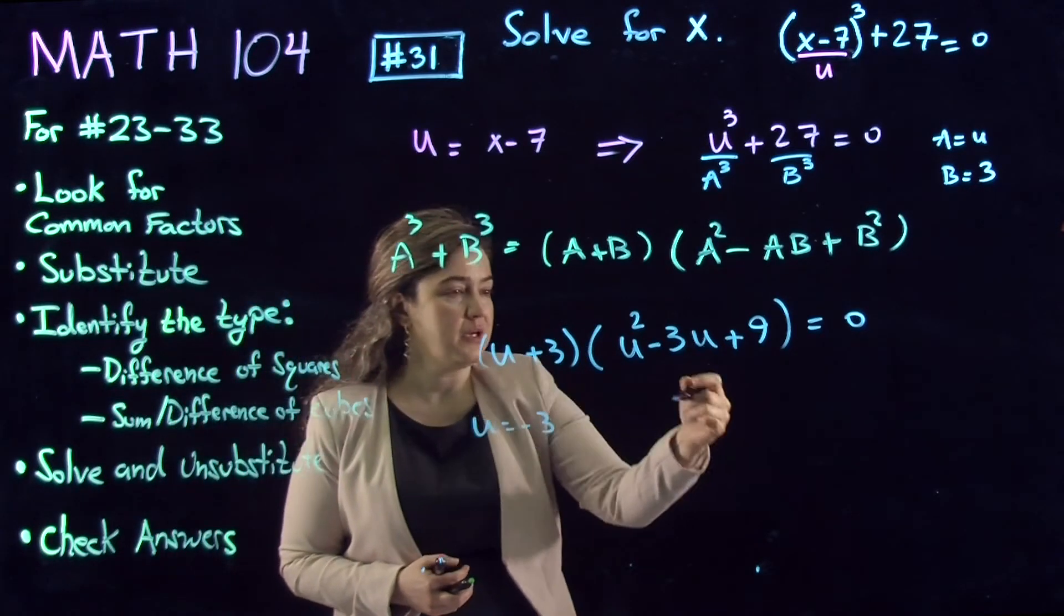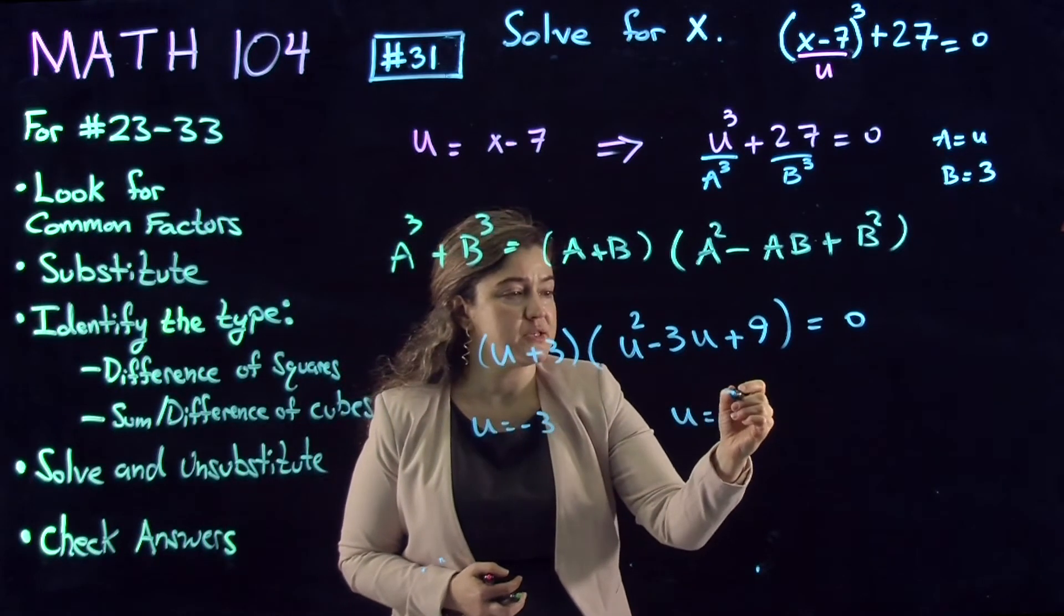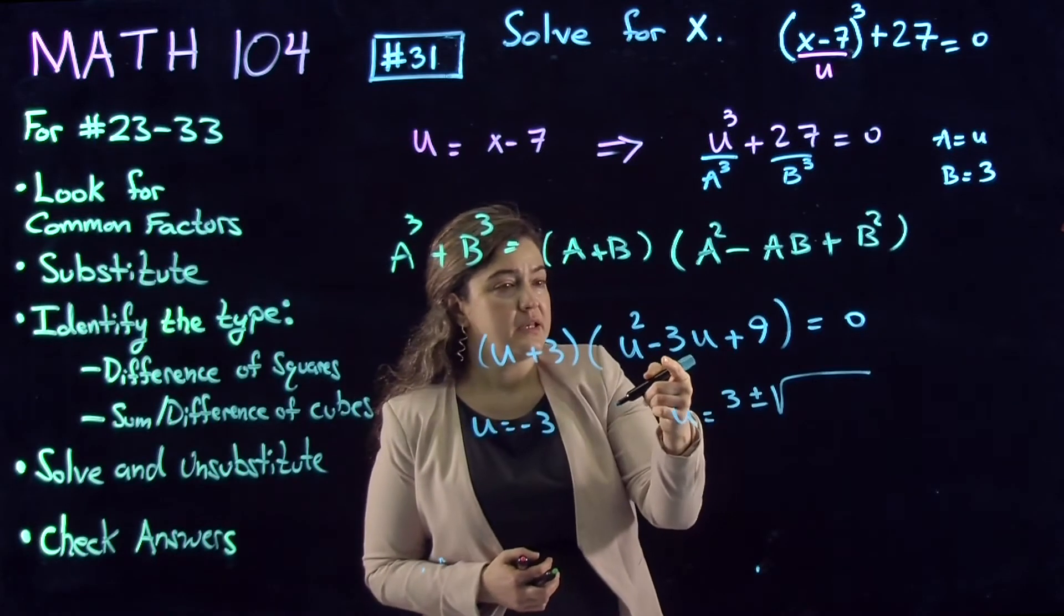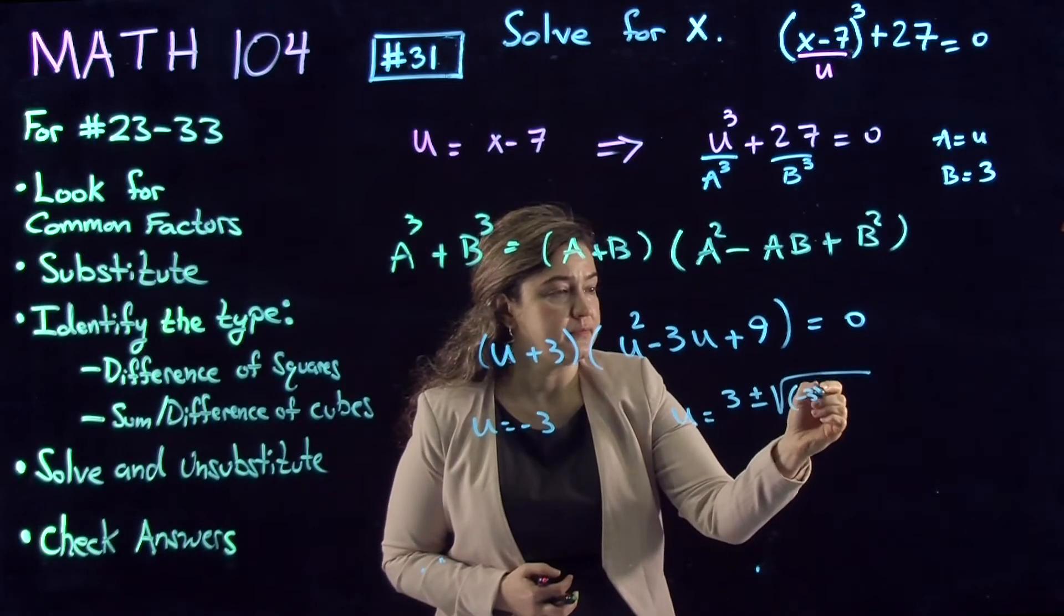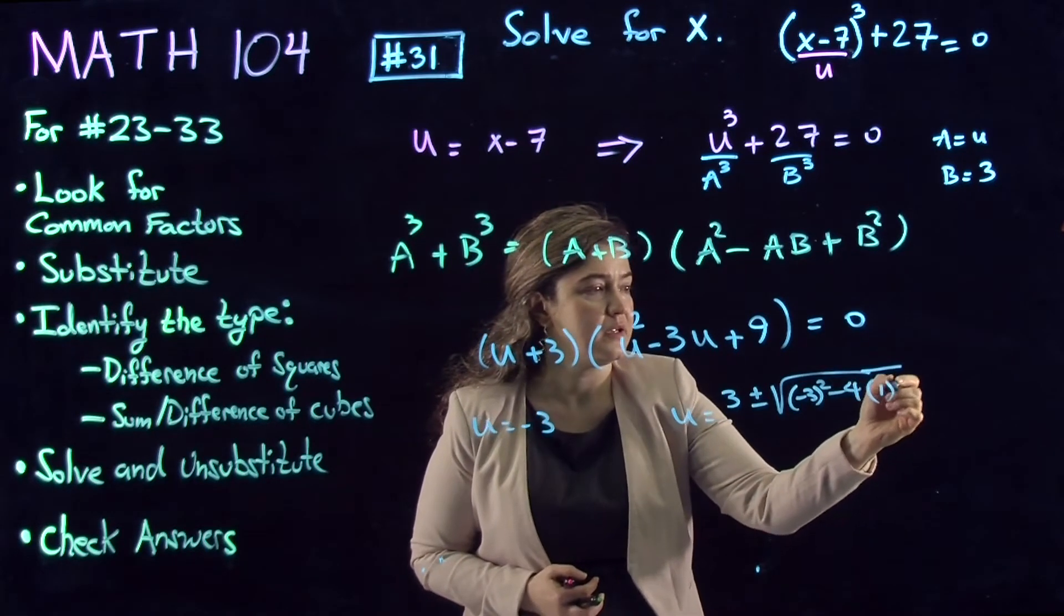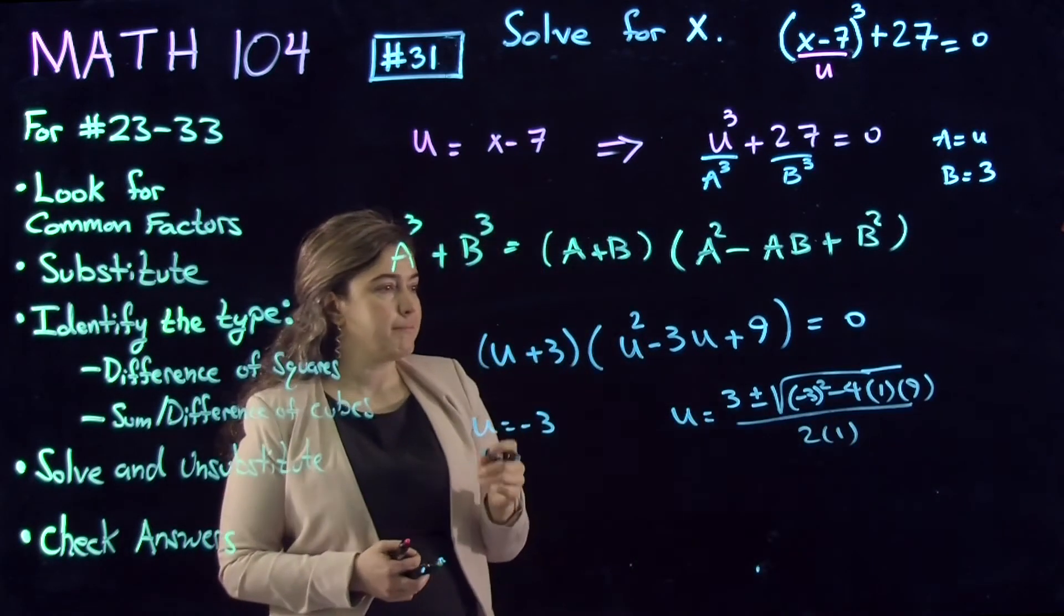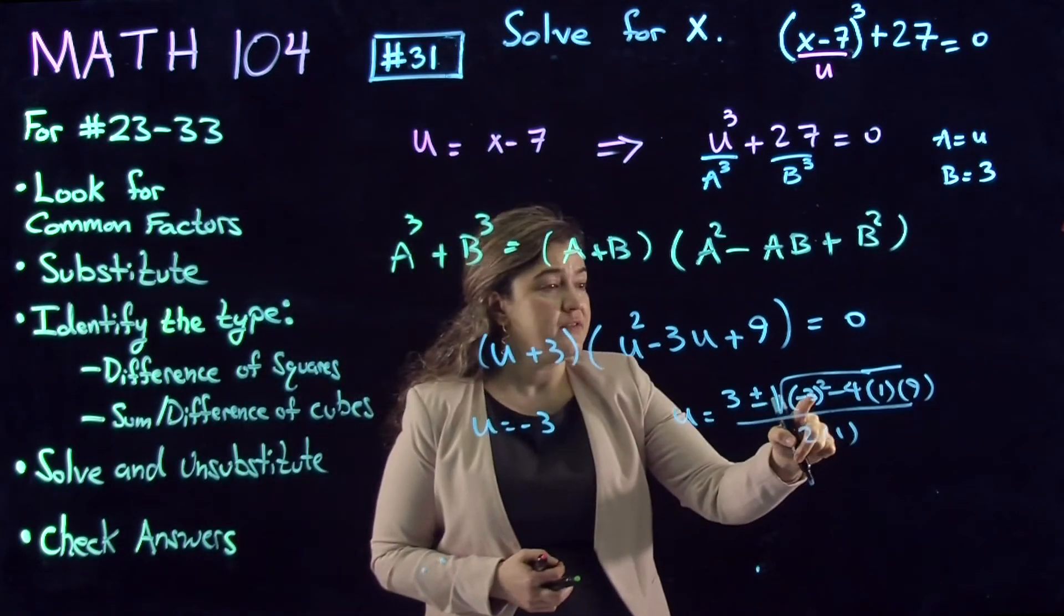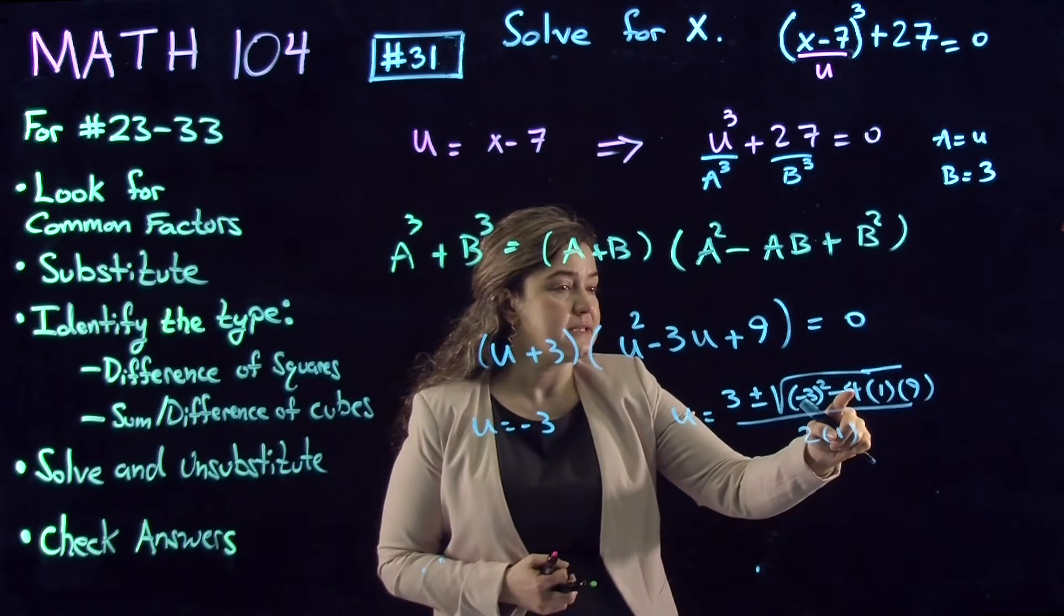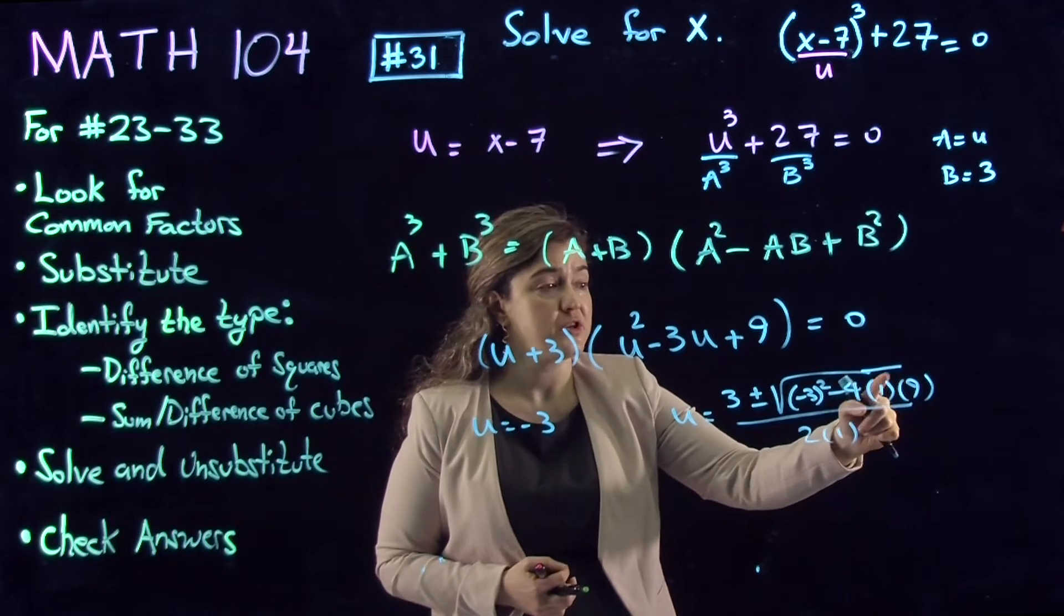The solution to the quadratic one is u = (-b ± √(b²-4ac))/(2a), which is 3 ± √((-3)²-4(1)(9))/(2(1)). (-3)² is going to be positive 9, and then minus 4×9 which is 36.